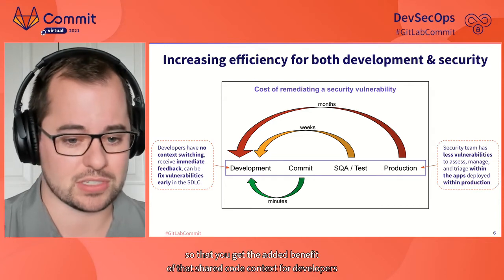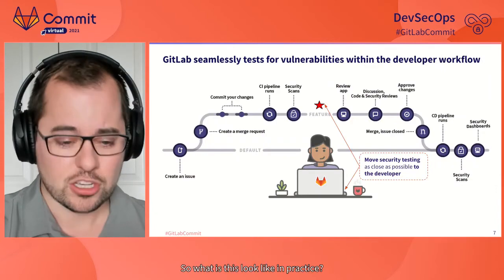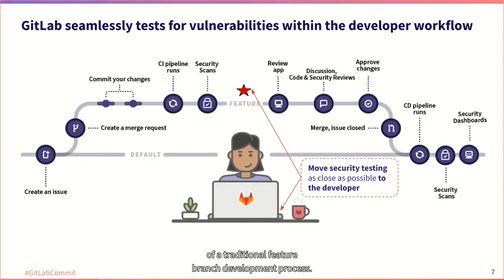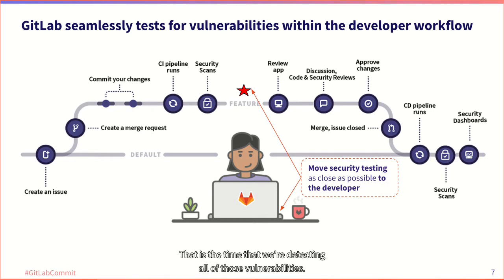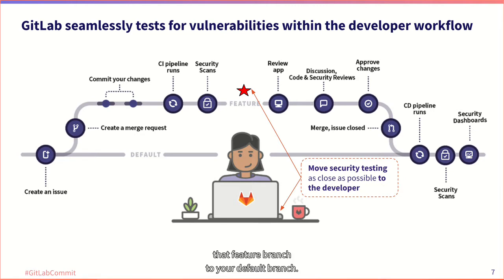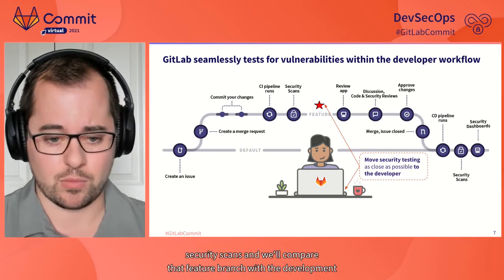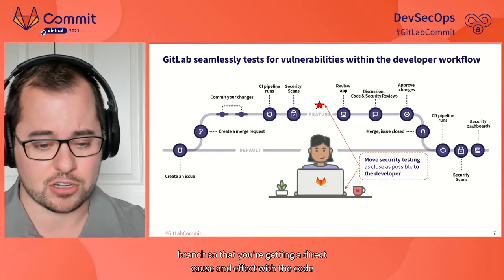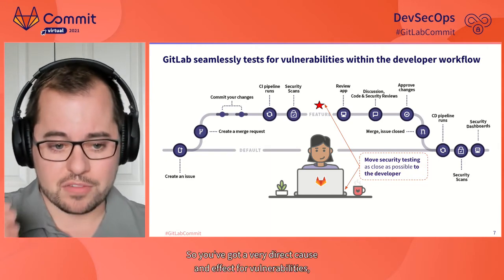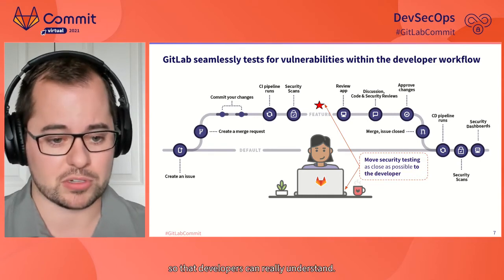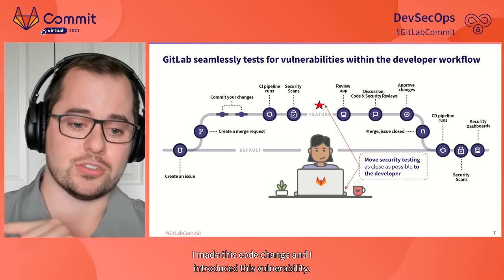So that's the shift left — shifting development and security testing as close to the actual development time as possible, so you get the added benefit of shared code context and reduce the cost to remediate vulnerabilities. In practice, we have a visualization of a traditional feature branch development process. As your developer pushes up commits, every commit triggers our CI/CD process, which runs all of our security scanning. That's when we're detecting vulnerabilities. On the far right, we run security scans again when you merge that feature branch to your default branch, comparing them to give a direct cause-and-effect view.